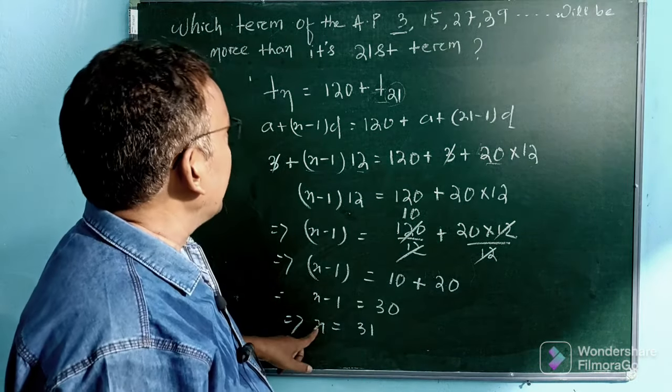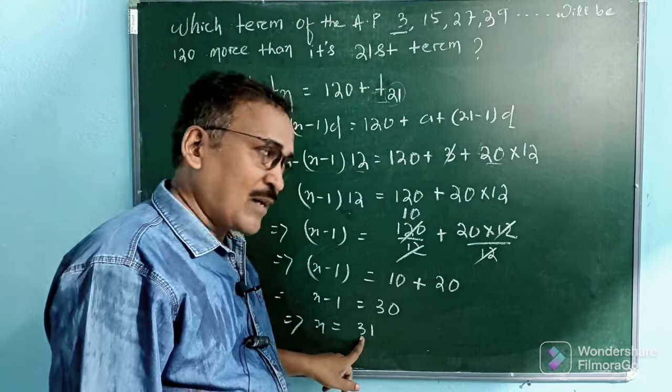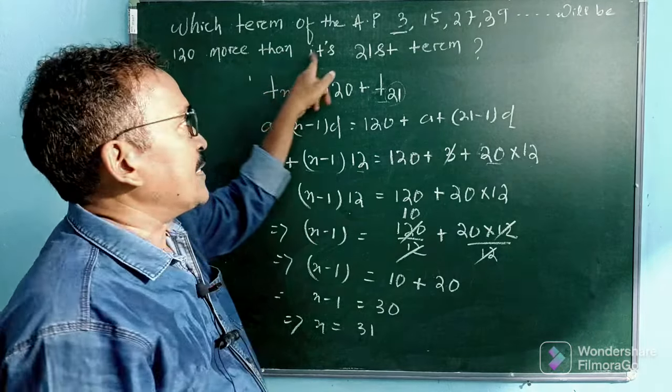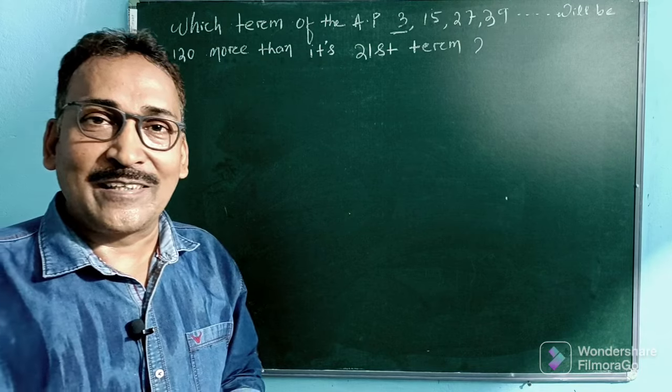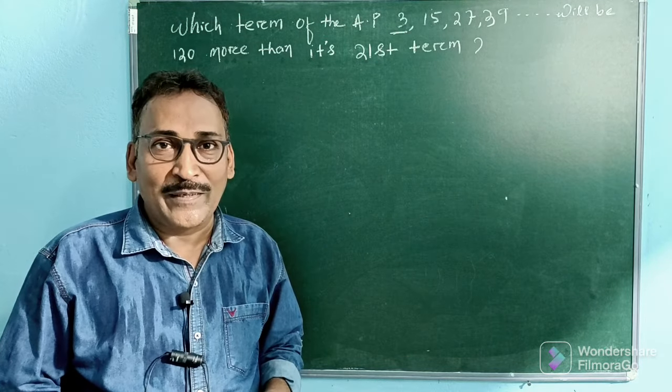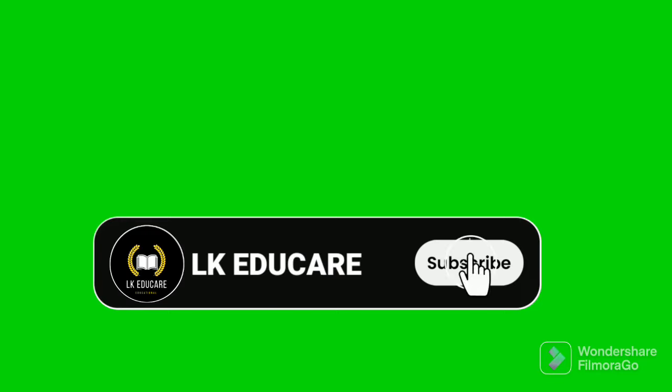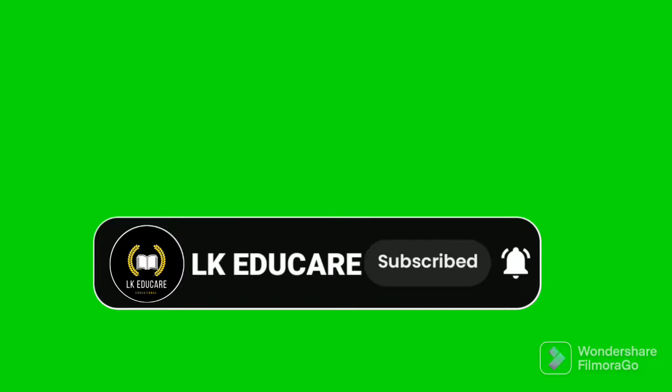So here n is equal to 31. Which term of the AP? That means the 31st term of AP is 120 more than its 21st term. This is the answer. Thank you so much for watching. Next time we will discuss another important question related to the AP. I'll see you next time.